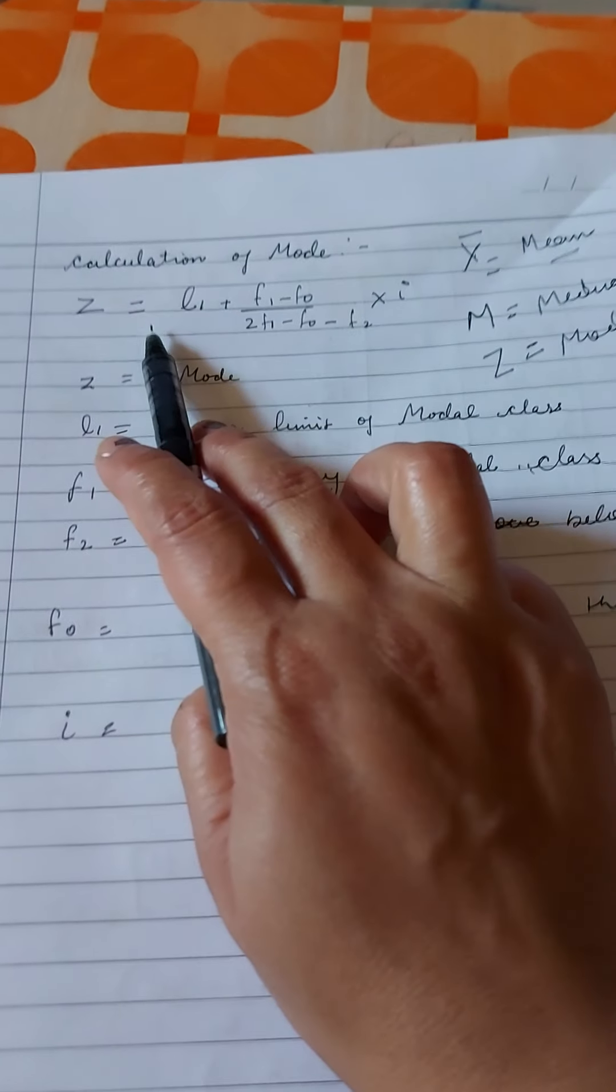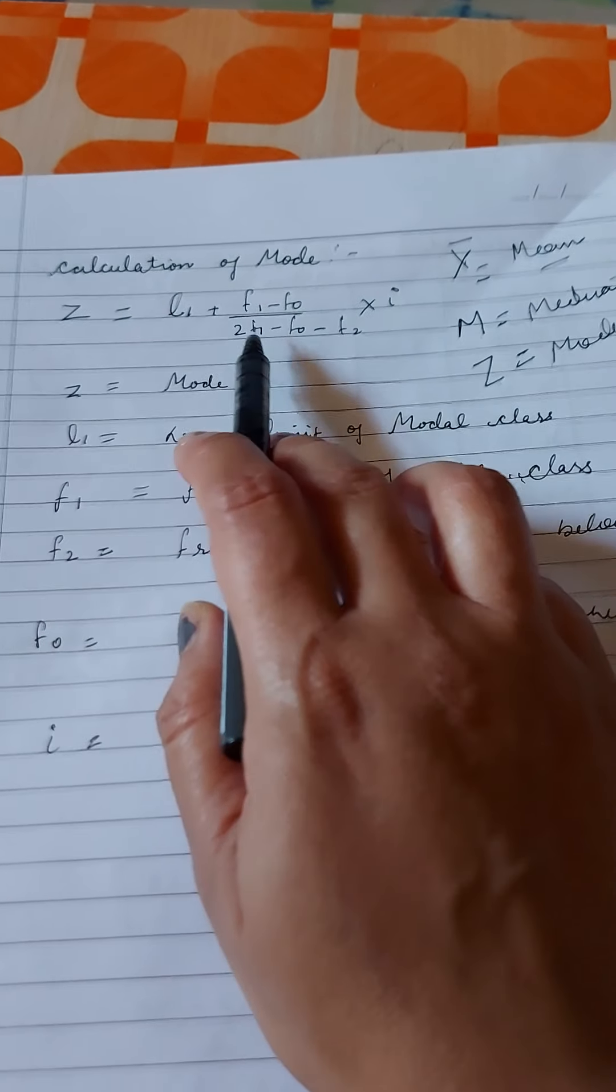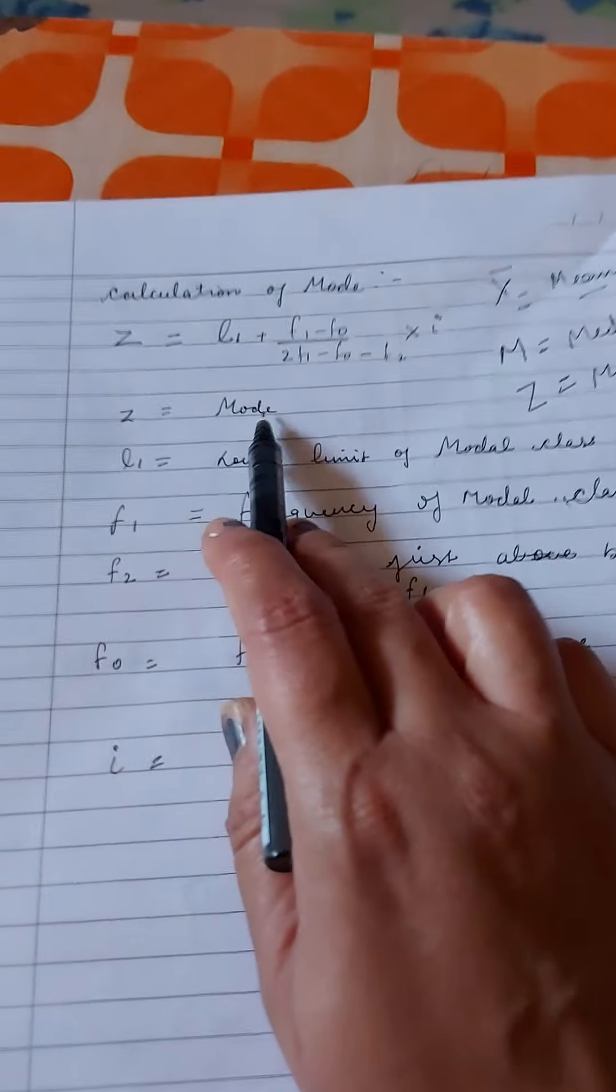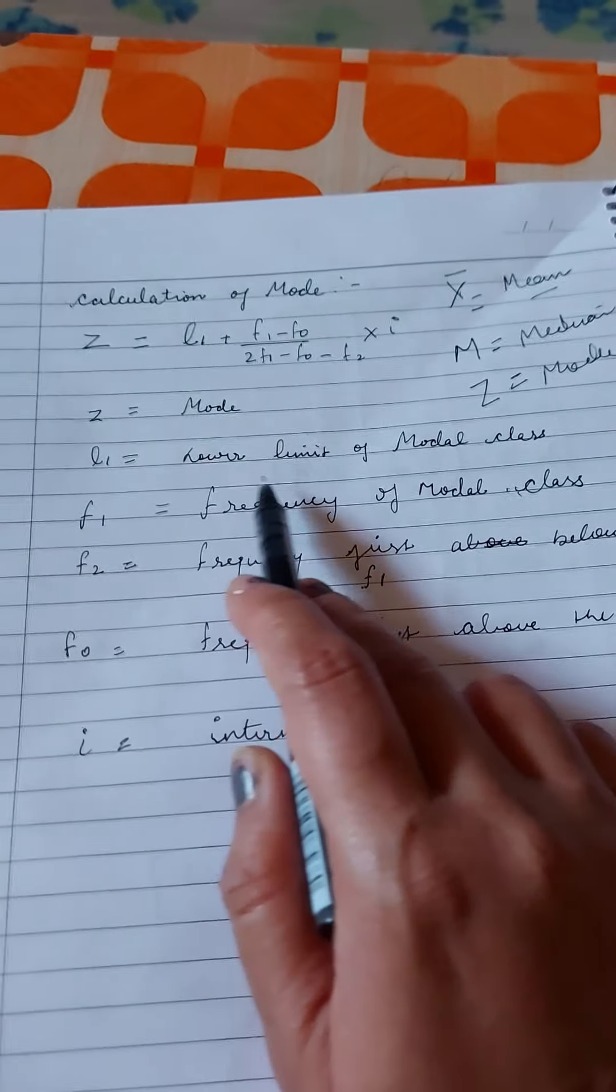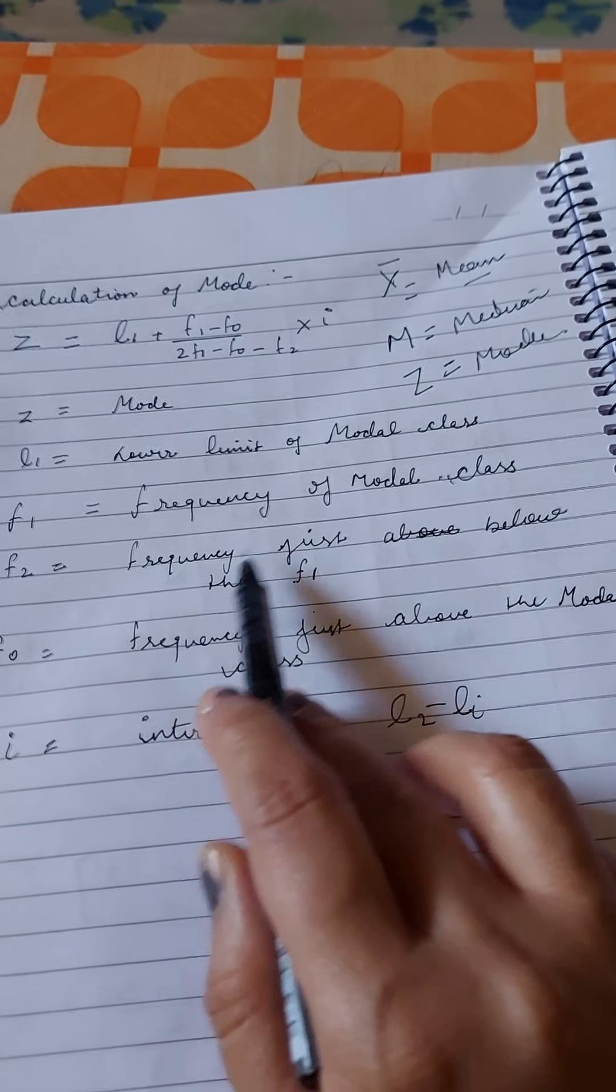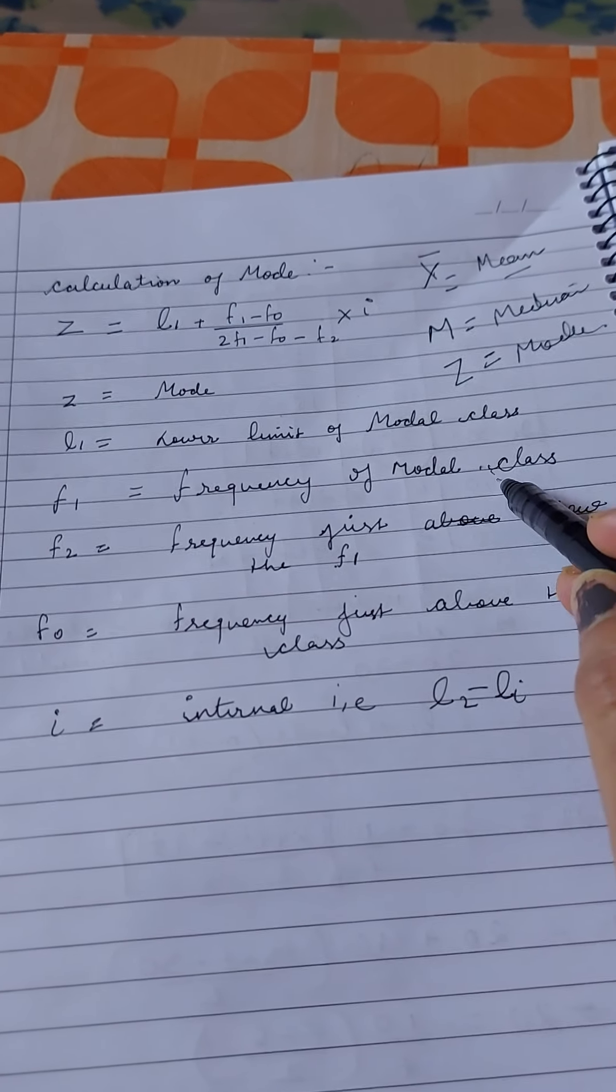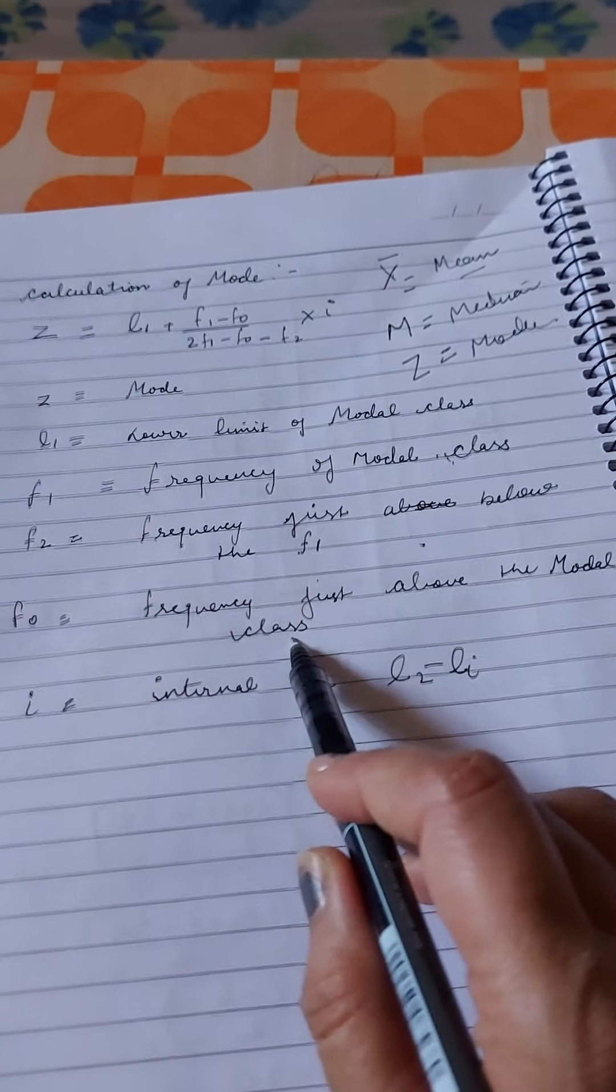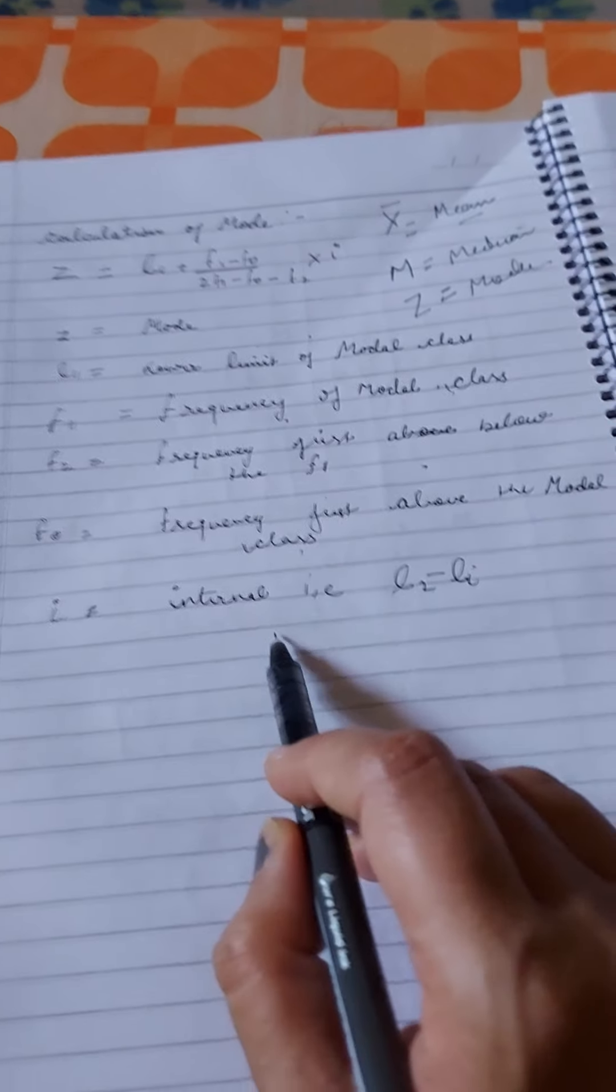When we have to calculate mode, we use this type of formula: L1 plus (F1 minus F0) by (2F1 minus F0 minus F2) into I. Remember this formula, where z means mode, L1 is the lower limit of the modal class, F1 is frequency of the modal class, F2 is frequency just below F1. When we solve questions, we will see that the frequency just below this frequency is called F2, and frequency just above the modal class, means the frequency just above this frequency, we call F0. I, we know, is interval.